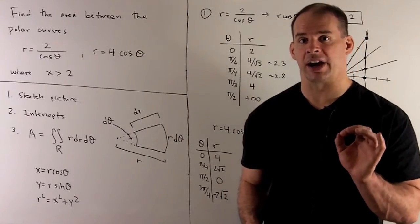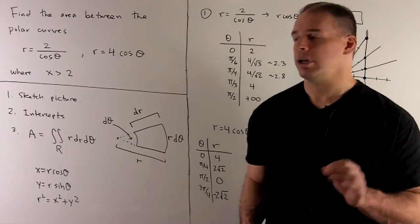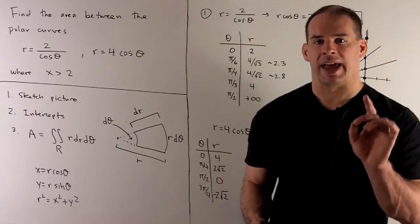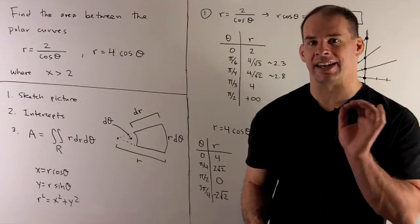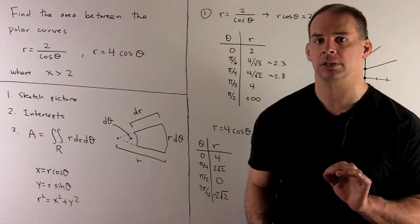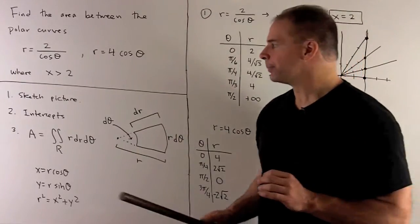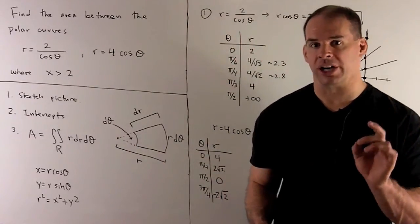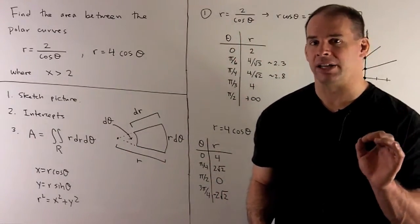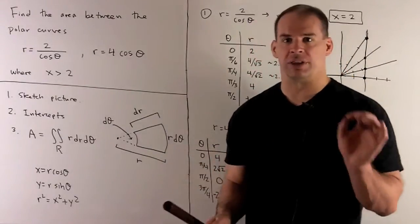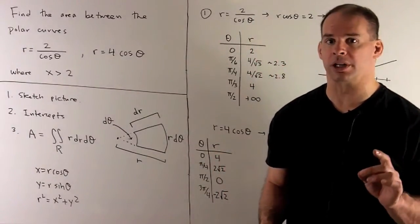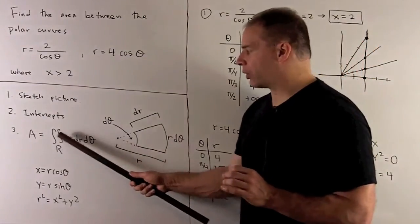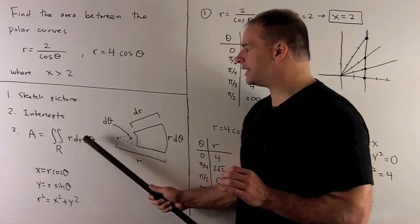Checklist for finding this area. First, we'll sketch both of our curves — it'll give us an idea of how they're situated and we'll be able to tell where the inside and outside functions are. Then we'll need to find the intercepts, which give us our limits of integration. Finally, we want our formula for the area of a region described by polar coordinates: a double integral over our region against r, dr, d theta.